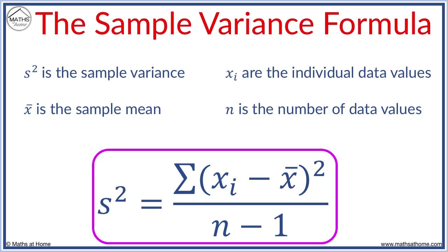s squared is the variance, xi are the individual data values, x bar is the sample mean, n is the number of data values.